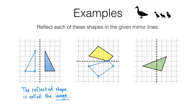We're going to look at each corner, count how far away it is from the mirror line, and reflect it the same distance away on the other side. Let's start with this corner — it's two squares away from the mirror line on the right hand side, so we're going to reflect it two squares away onto the left. That point will get reflected to here. The next point is three squares away from the mirror line on the left hand side, so it's going to be reflected three squares away to the right — that point goes here.